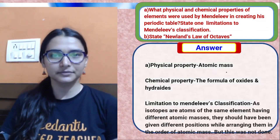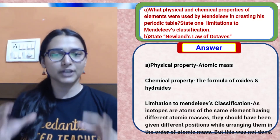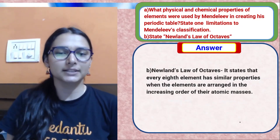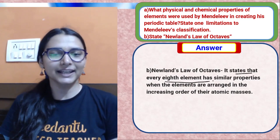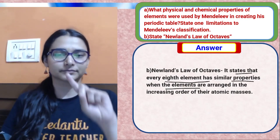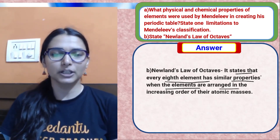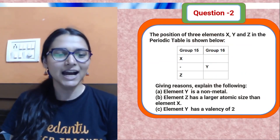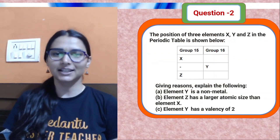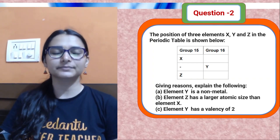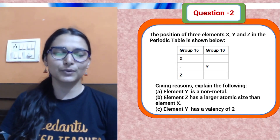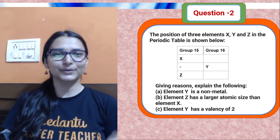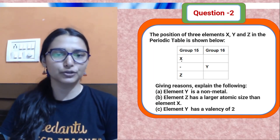Check your answer — I'll upload notes in the description box so you can match your answers and see how to frame them exactly. Newlands states that every eighth element has properties similar to the first element when arranged in increasing order of atomic masses. Be honest with yourself — that's what matters most as a student.